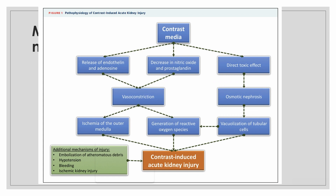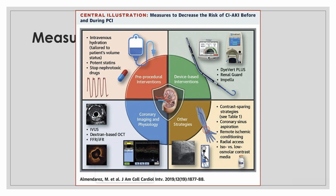Measures to decrease contrast-induced nephropathy include pre-procedural and intra-procedural interventions. Pre-procedural interventions include IV hydration, use of potent statins, and stopping nephrotoxic drugs. Intra-procedural interventions include radial access, use of appropriate contrast media, contrast sparing strategies, coronary physiology-based interventions, use of IVUS, and dextran-based OCT.